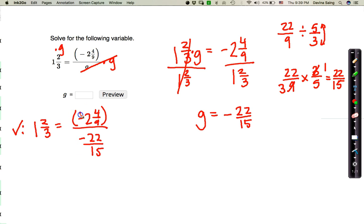So here, I need to simplify this to see if it truly equals 1 and 2 thirds. First, I recognize negative divided by negative is a positive. So I took care of the sign. 2 and 4 ninths is 22 ninths. We're going to divide that by 22 fifteenths. I'm going to go ahead and rewrite this as 22 ninths times the reciprocal. So that's going to be 15 over 22.